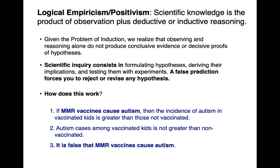Given the problem of induction, we realize that observing and reasoning alone don't produce conclusive evidence or decisive proofs of hypotheses. Scientific inquiry consists in formulating hypotheses, deriving their implications, and testing them with experiments. A false prediction should force you to reject or revise any hypothesis. Here's an example: if MMR vaccines cause autism, then the incidence of autism in vaccinated kids would be greater than in non-vaccinated kids. Claim two: autism cases among vaccinated kids is not greater than non-vaccinated. Using Modus Tollens deductive reasoning, we must conclude it is false that MMR vaccines cause autism.